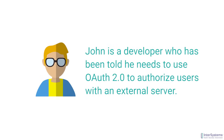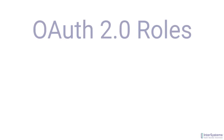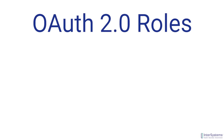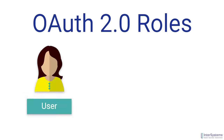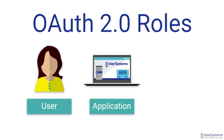John's application will delegate the responsibilities of user authorization to some other service, rather than managing them on its own. Let's take a look at the high-level roles that exist within an OAuth 2.0 framework. For simplicity, we will use three roles to start: the user, the application, and the API.